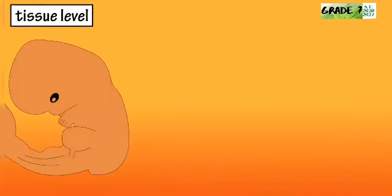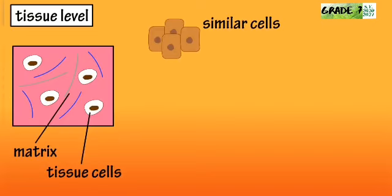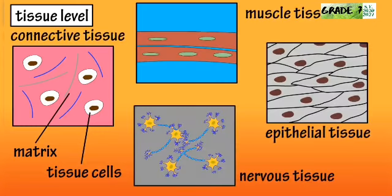The next level is the tissue level. Tissue is a group of similar cells that have developed from the same part of the embryo and all perform a certain function. Tissue cells are surrounded by the matrix or non-living intracellular substances. There are four major types of tissue in the body.